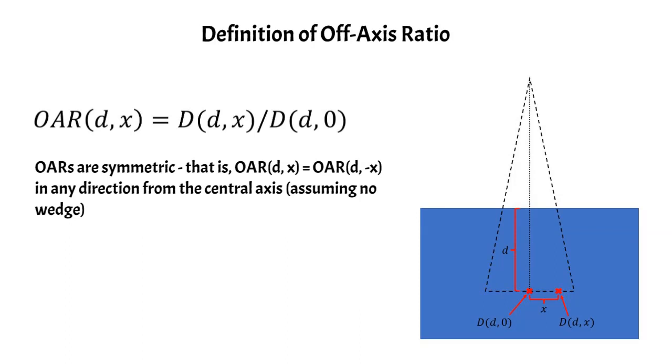A couple things to note about the off-axis ratio is that they're symmetric, so it doesn't really matter what direction you move. You could go right or left, forward, back. You could even go diagonally. But the off-axis ratio is always symmetric, and so it doesn't matter what direction you're moving from the central axis. Your off-axis ratio is always going to be the same.